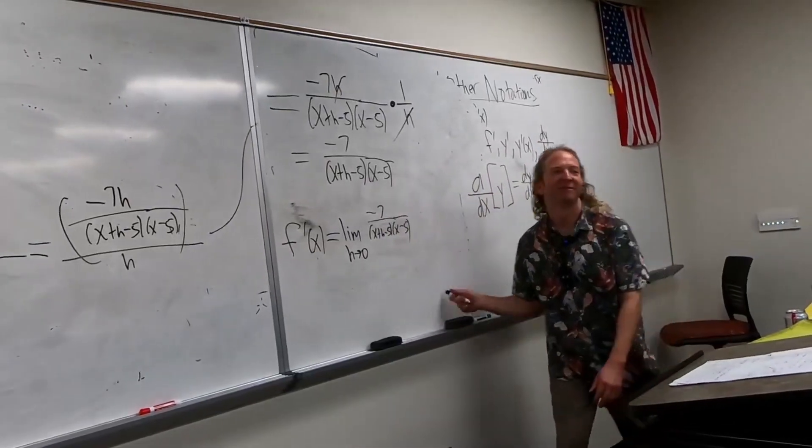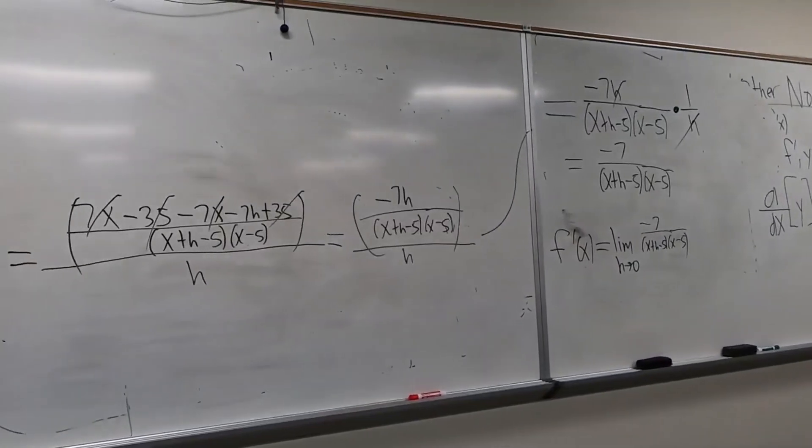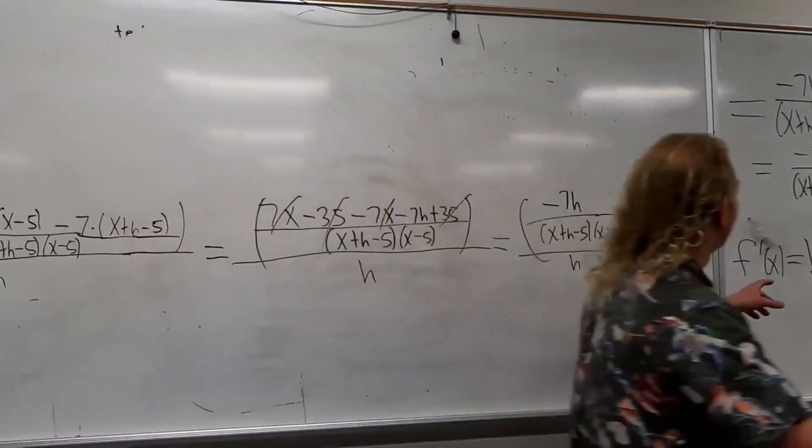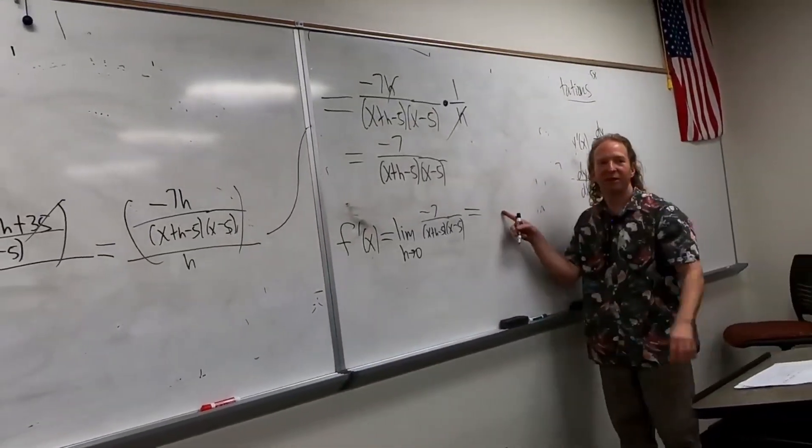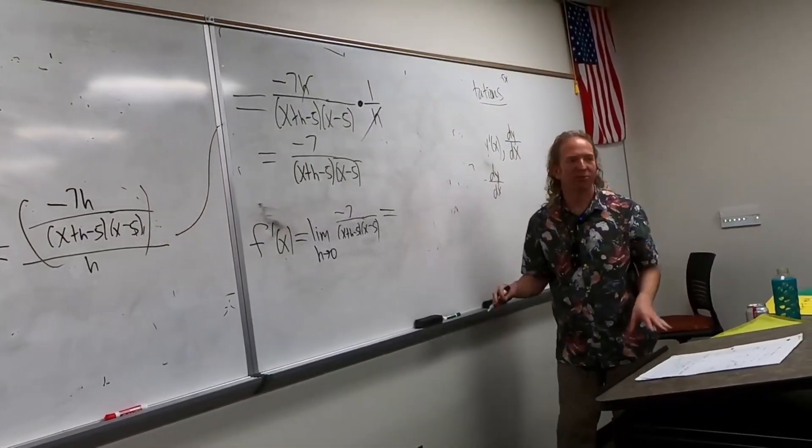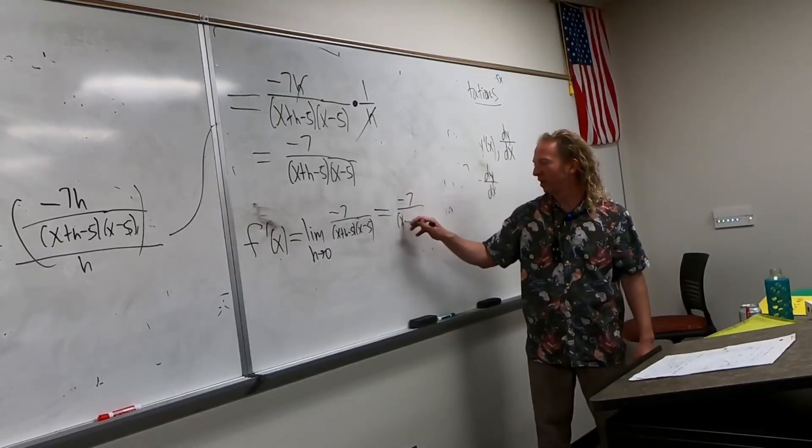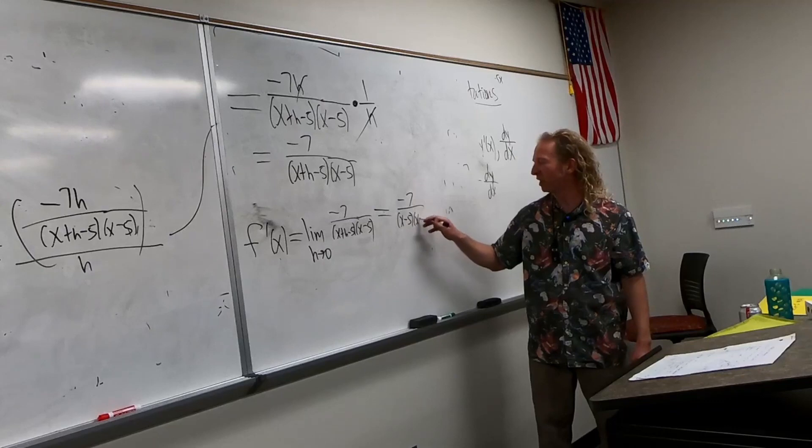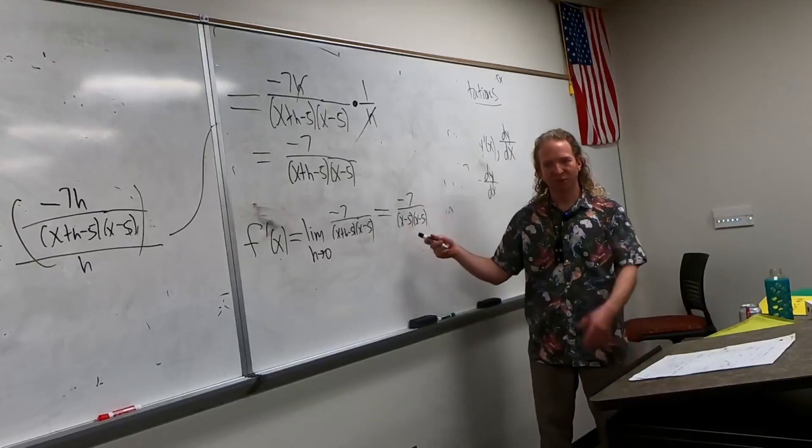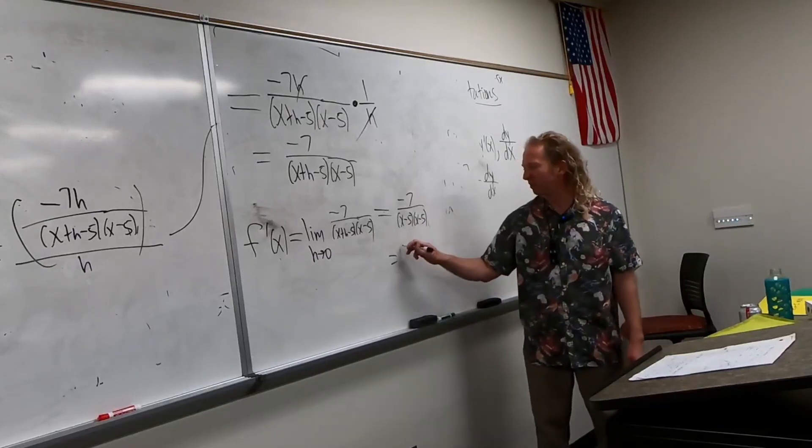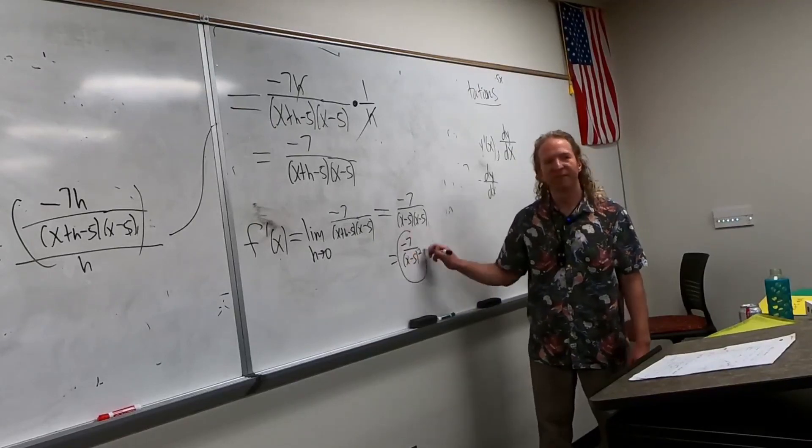And then, you just have to plug in zero for h. And then, we're done. So, when you do that, do you write the limit sign? No. Yeah, you drop it. Don't write it. Don't write it. Good. So, you just do this. Negative seven over (x minus five)(x minus five). You could leave it like that. That's kind of weird. No one really does that. Squared. Yeah. So, typically, people do this. They write it like this. That's it. All right.